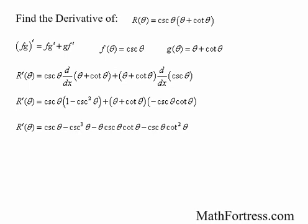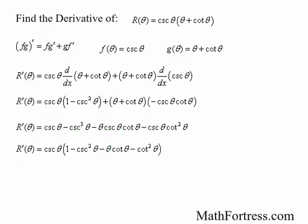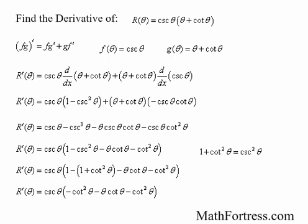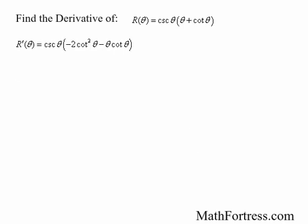Alternatively, we could factor out a cosecant of theta. Using the trigonometric identity 1 + cot²(θ) = csc²(θ) — which you should have learned from precalculus — we substitute the appropriate expression for cosecant squared of theta. Simplifying further, the ones cancel out, we distribute the negative sign, collect like terms, and factor out a negative and a cotangent of theta. So an alternative form for the derivative of r(θ) is negative csc(θ) · cot(θ) · (2cot(θ) + θ).